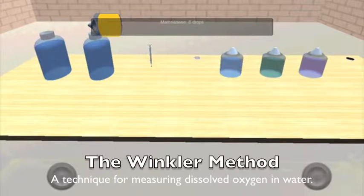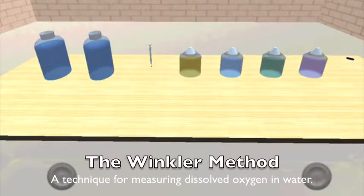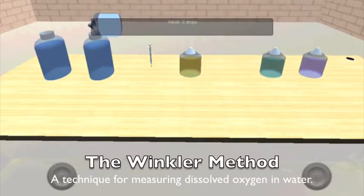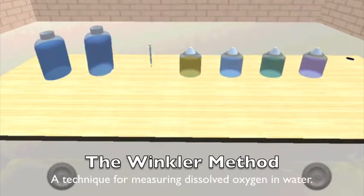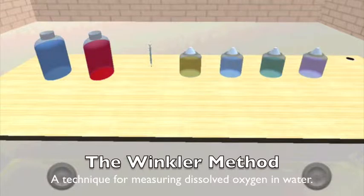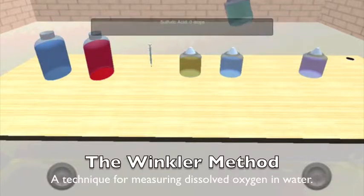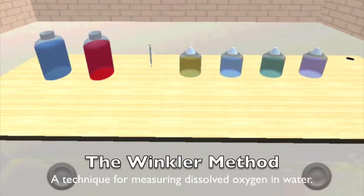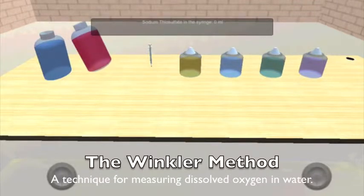First, we are going to add 8 drops of manganese sulfate stored in a squeeze bottle to the water sample. Next, we add 8 drops of alkali iodide azide stored in a squeeze bottle to the same sample bottle. Now we mix the sample. If oxygen is present, a brownish-orange cloud of precipitate will appear. Next, add 8 drops of sulfuric acid to the water sample. After this, invert several times to dissolve the precipitate.